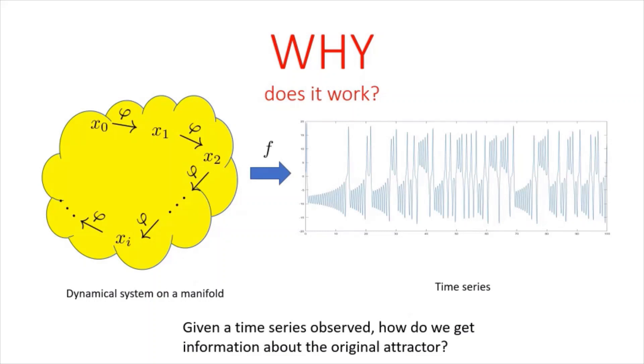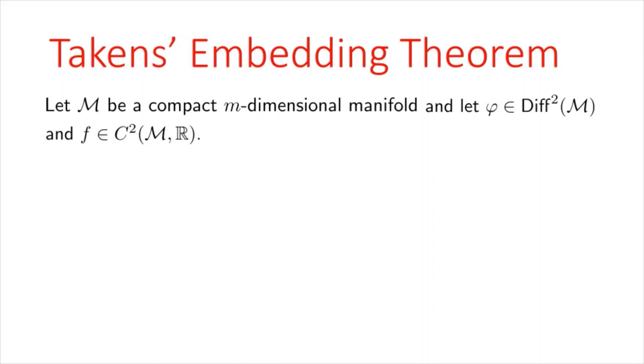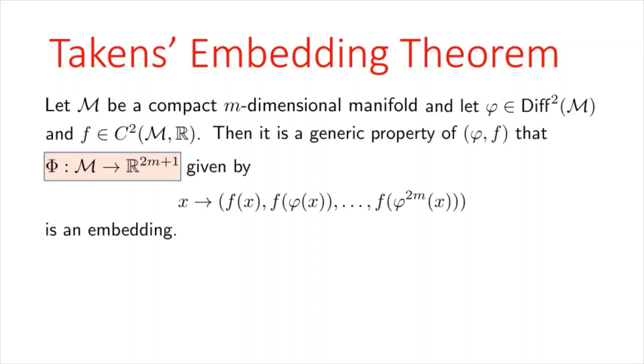So this question is answered by Takens' embedding theorem, which came out in the early 1980s. It says that if m is a compact m dimensional manifold, and if phi is a diffeomorphism and f is an observation function with sufficient regularity, then it is a generic property of the pair phi and f that the vector valued function from the manifold m to the Euclidean space of dimension two m plus one, defined by the observation of the trajectory is actually an embedding.